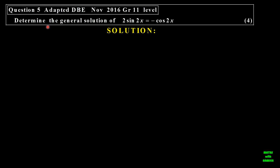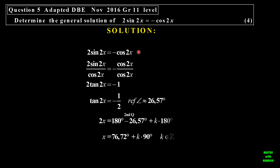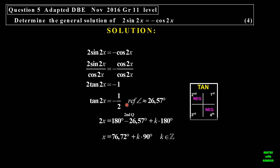Let's look at this question. We want to find the general solution of 2 sine 2x equal to negative cos of 2x. We notice the angles are the same, and I've got co-ratios. So I can divide everything by cosine of 2x. Sine over cosine becomes tangent. Cosine over cosine gives me 1. Make tangent 2x the subject, that gives me negative a half. The reference angle I get there is 26.57. Tangent is negative in the second and fourth. For a general solution, I only take the first two quadrants. So for the second: 180 minus 26.57, and then I must divide everything by 2. So 2 goes into 180 gives me 90. And k is an element of the set of integers.